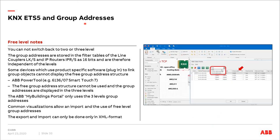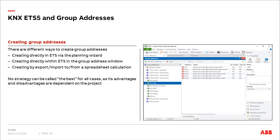The ABB My Building Portal — used for voice control or control touch configuration — only supports three-level group address range, though this may change in future. Most visualization and BMS systems on the market can import ETS projects in all three styles; when importing you can select free, two-level, or three-level. One limitation: export and import in free address style is only possible in XML format, not CSV — CSV is covered later as the easier option for Excel editing.